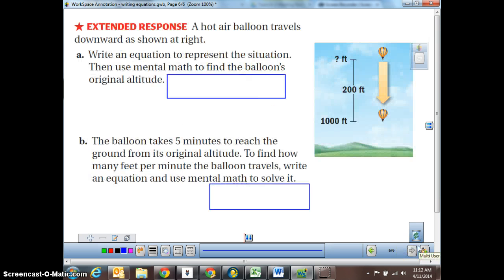So here we have our last page. A hot air balloon travels downward as shown at right. Write an equation to represent the situations and then use mental math to find the balloon's original altitude. That's our first one. And then we have the balloon takes 5 minutes to reach the ground from its original altitude to find out how many feet per minute the balloon travels.